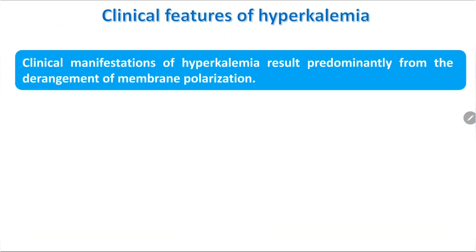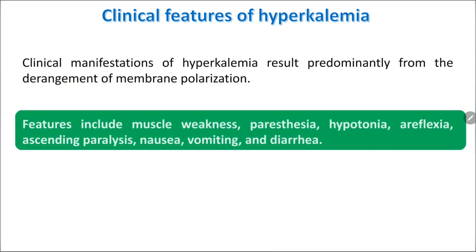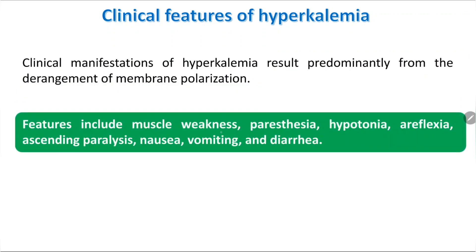The clinical manifestations of hyperkalemia are mainly due to derangement of membrane depolarization. Features include muscle weakness, paraesthesia, hypotonia, and areflexia. There will be ascending paralysis in which the patient may develop respiratory failure, as well as nausea, vomiting, and diarrhea.